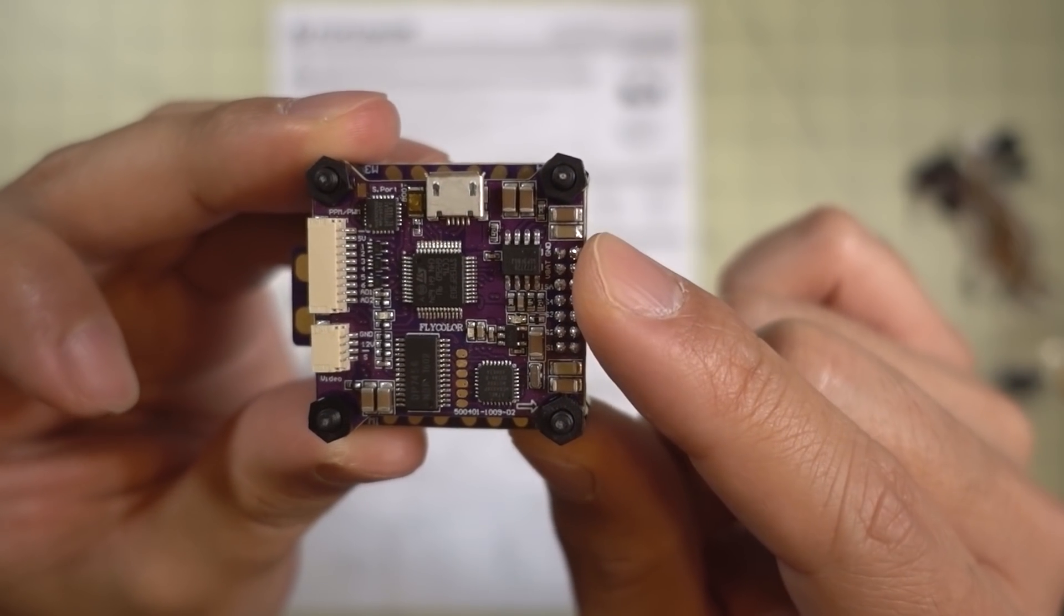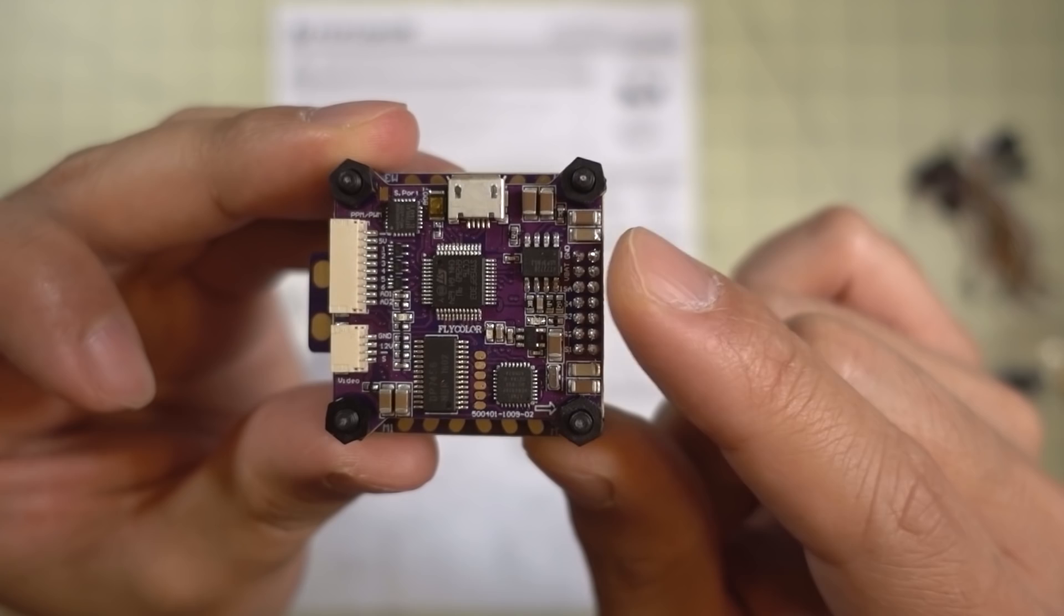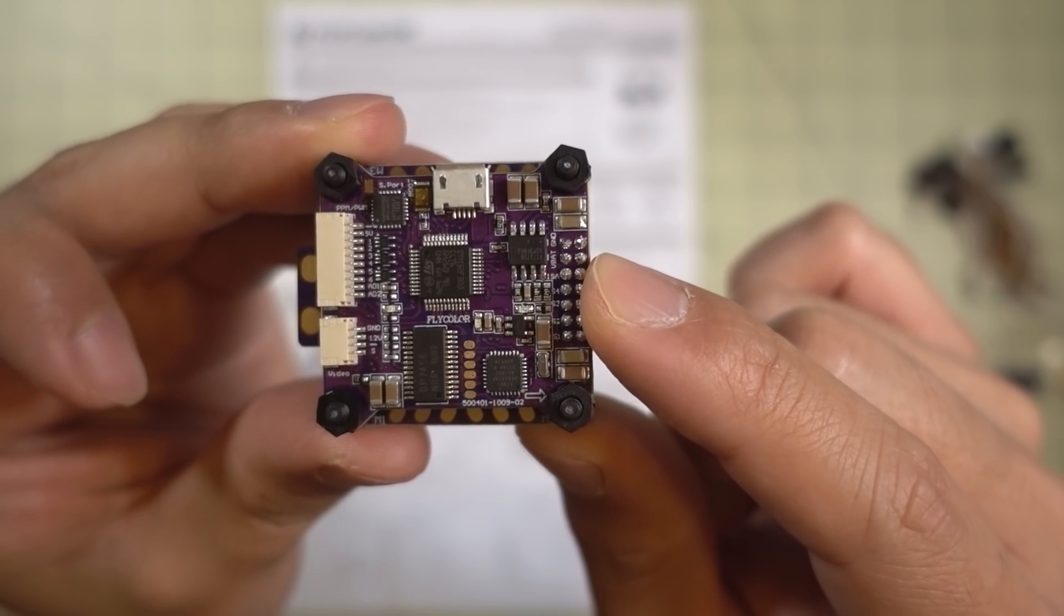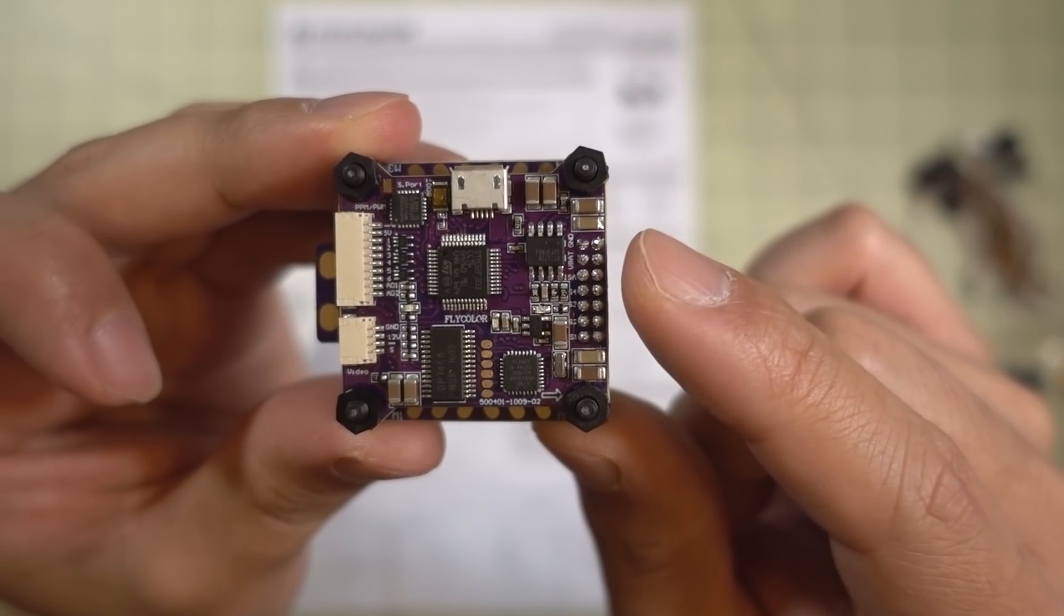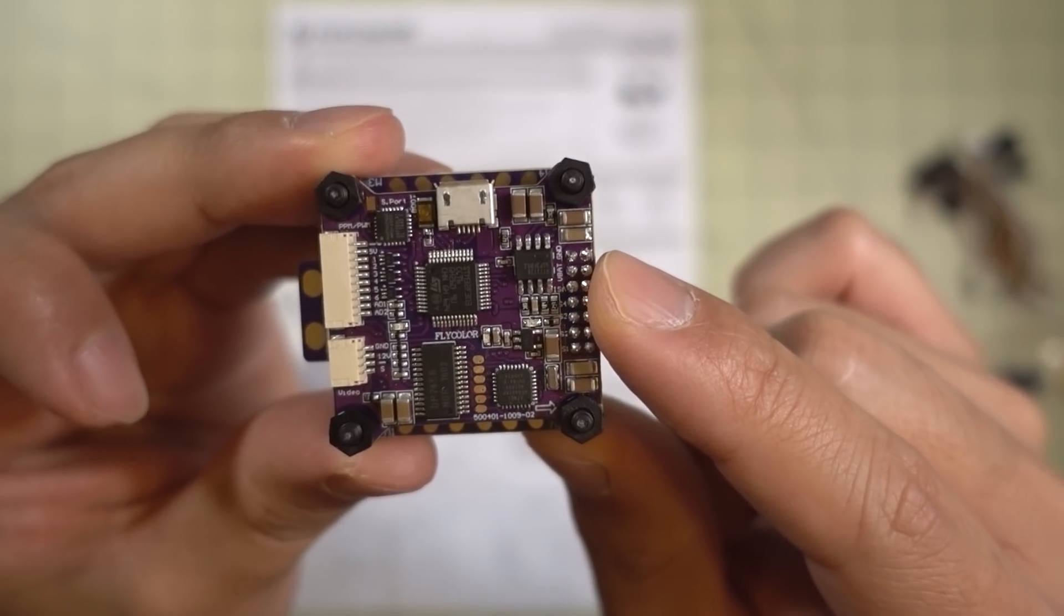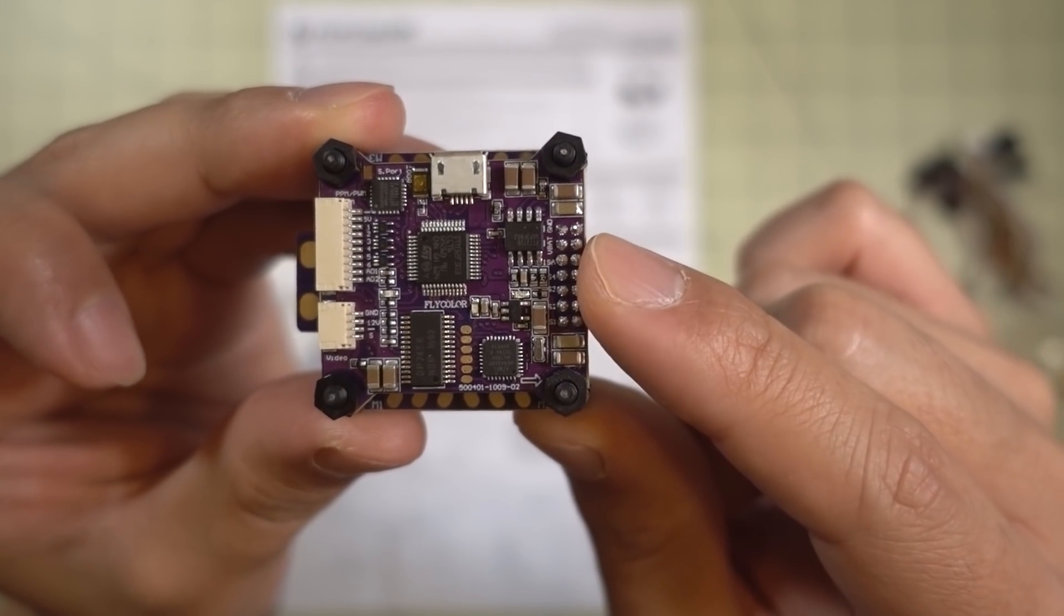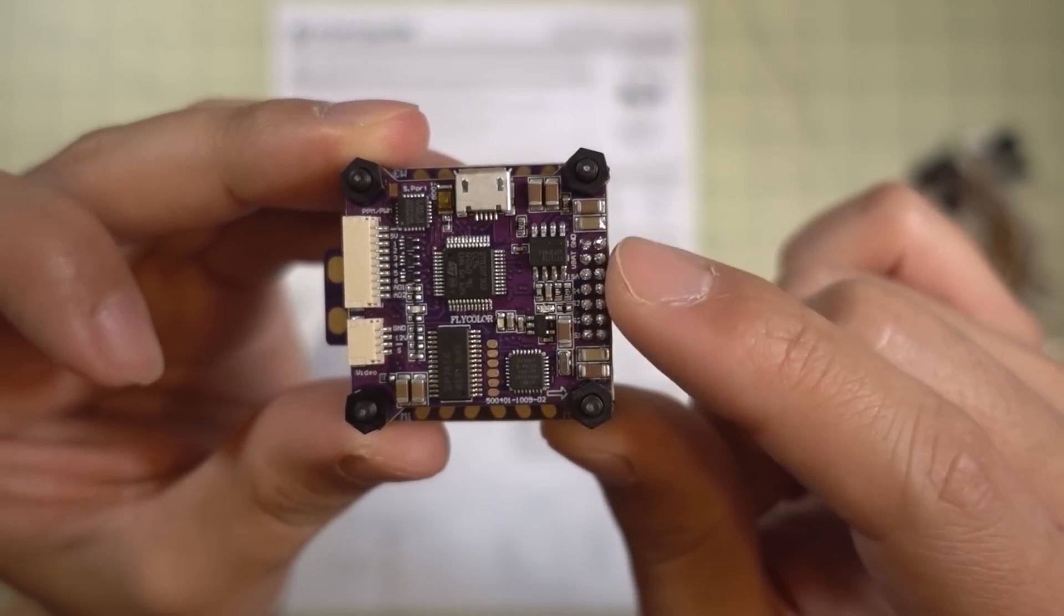And the flight controller in here is actually the SP Racing F3 target. It has the older 6050 gyro and not the 6000 gyro. But still a good flight controller. It's an F3 processor of course.